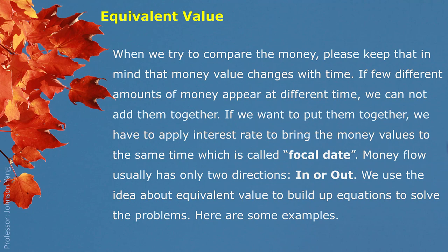Money flow usually has only two directions: flow in or flow out. We use this idea about equivalent value to build up equations to solve problems. For example, if you have a debt to be paid $100 today and you didn't pay, next year you may need to pay $120. So $100 now is equivalent to $120 next year, or equivalent to $80 last year.